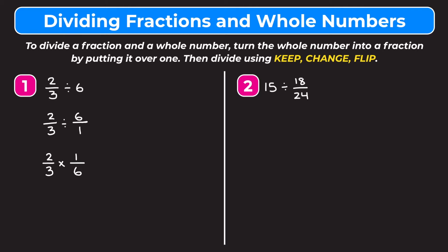Now we're going to multiply straight across, but first we cross-reduce. We can cross-reduce the 2 and the 6 by dividing them both by 2: 2 divided by 2 is 1, and 6 divided by 2 is 3. On the top we multiply 1 by 1, which is 1, and on the bottom we multiply 3 by 3, which is 9 — so we get 1/9.